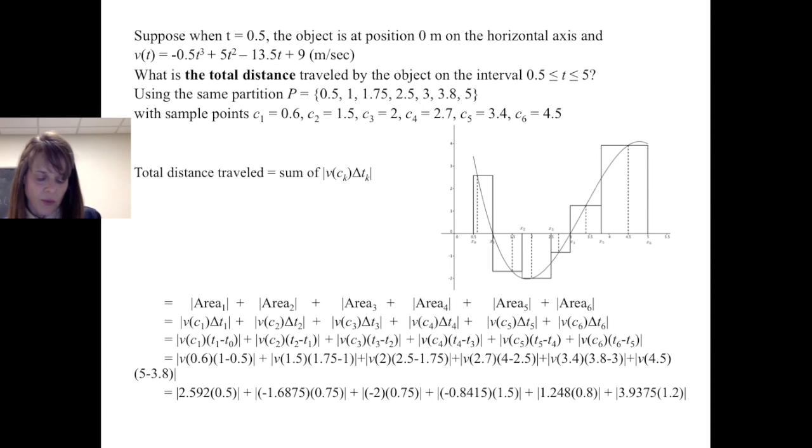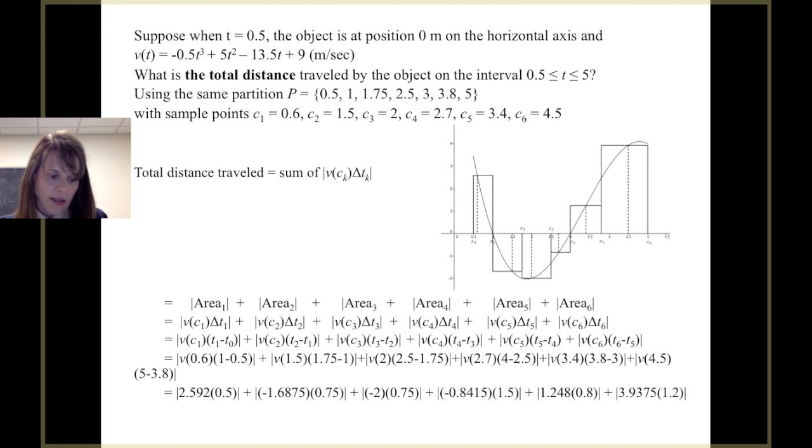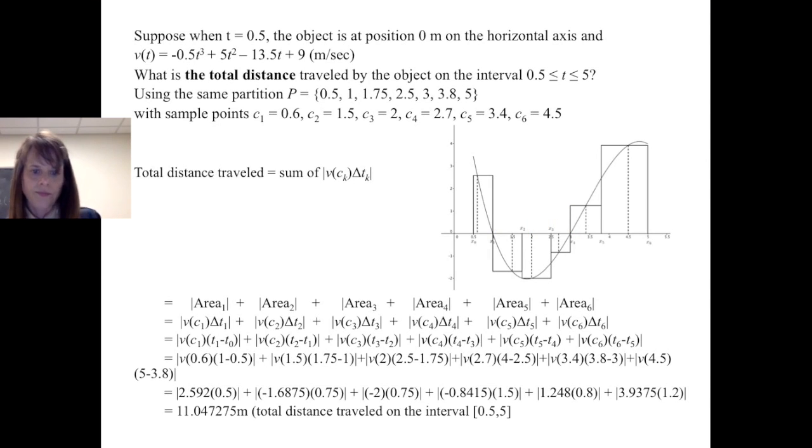So where we had negative values before, we now have positive. And if we were to graph something like this, anything that was the negative portion of the curve would actually come and be positive. So these rectangles would now be above the x-axis. And we would say that the total distance traveled on the interval from 1/2 to 5 seconds is approximately 11.05 meters.